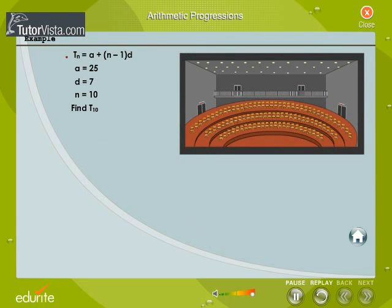In the example of the auditorium the number of seats in the first row that is a is equal to 25. The common difference d is equal to 7. Find the number of seats in the 10th row.